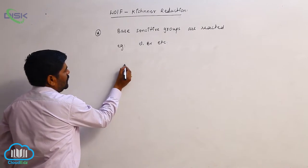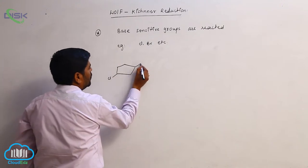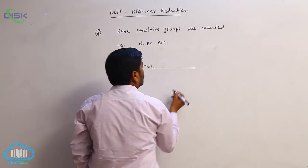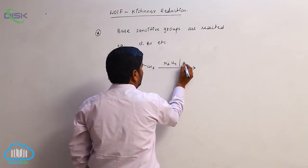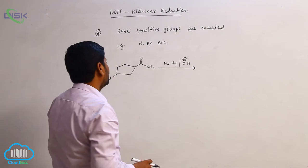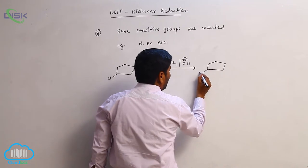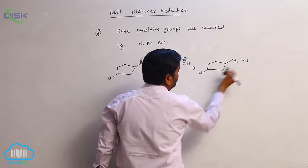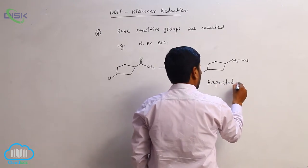For example, here is a compound with a chlorine substituent and a C=O group with a CH3. While using hydrazine in a basic medium, the halogen can act as a base-sensitive group. Therefore the expected product is CH2–CH3 with halogen retained as it is — that is the expected product.